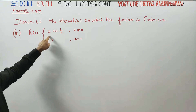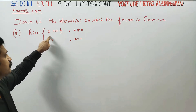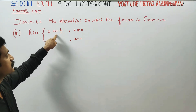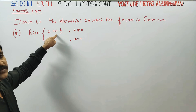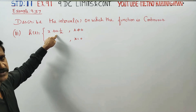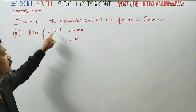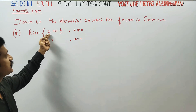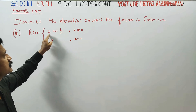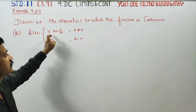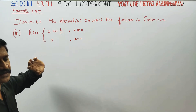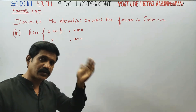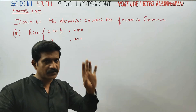This is an algebraic function, this is a trigonometric function — that is sine x, cos x — all of them are continuous functions. An algebraic function is a continuous function. The multiplication of continuous functions is also a continuous function.